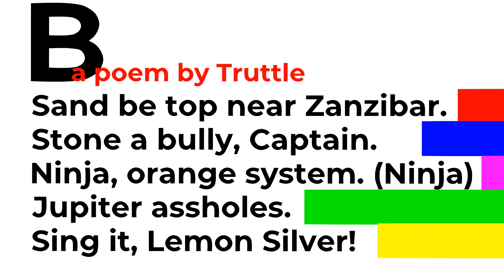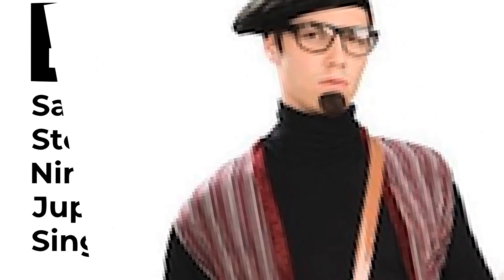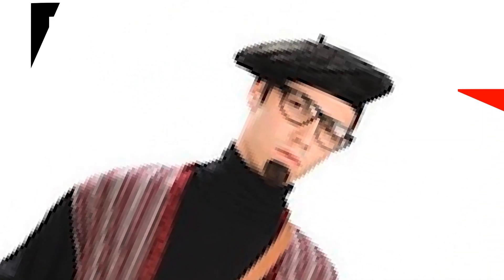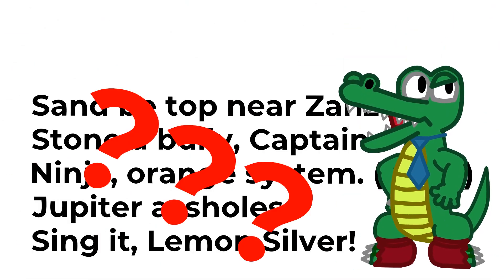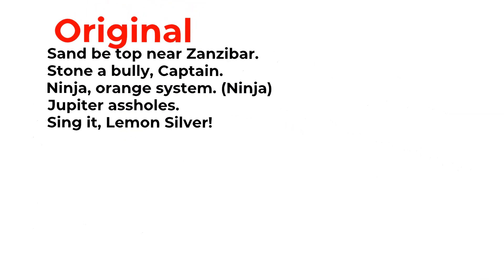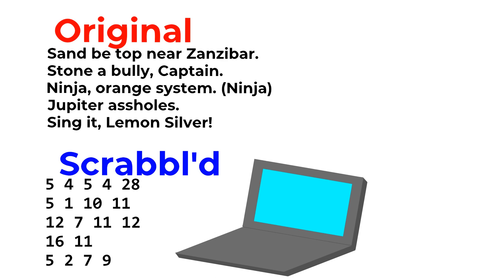It sounds like it was written in one draft while the author was doing some sort of bizarre drugs that make you totally see the world for what it is, man. That's why it's called Beatnik. So, what does this program do anyway? Well, to make it easier on ourselves, let's convert it to its Scrabble values — that's all the computer cares about, and the fancy words don't matter as long as the Scrabble values match up to actual commands.